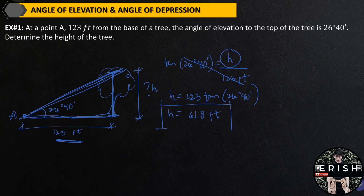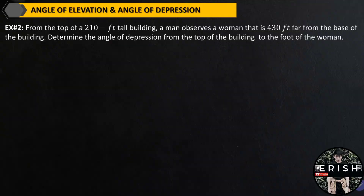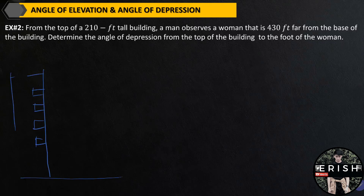This is the answer for example number 1. Example number 2. From the top of a 210-feet-tall building, a man observes a woman that is 430 feet from the base of the building. Let's draw it. This is the building — its height is 210 feet. The man is at the top of the building, and the woman is 430 feet from the base.